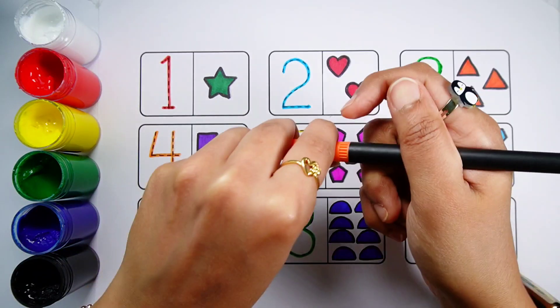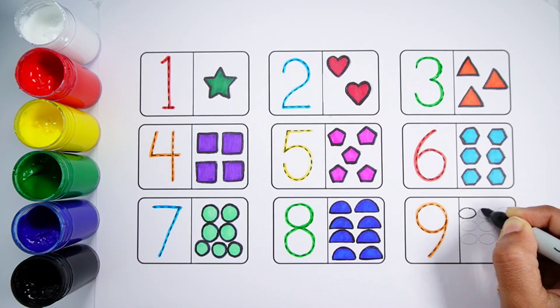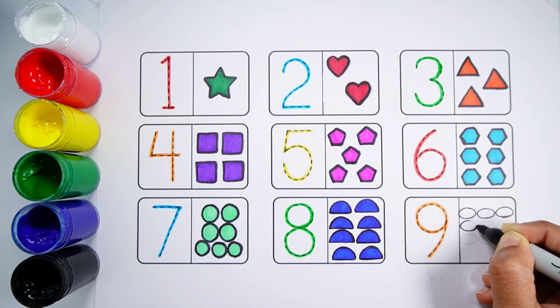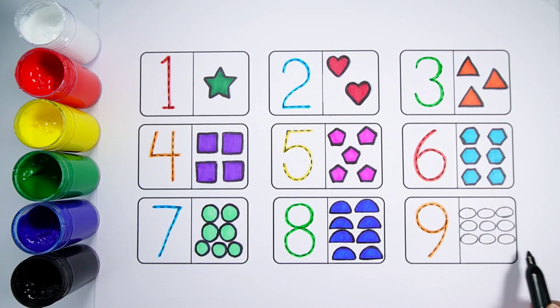Number 9. One, Two, Three, Four, Five, Six, Seven, Eight, Nine. Nine Ovals.